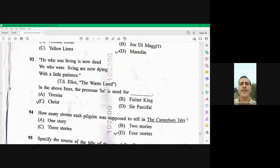Question number 93. He who was living is now dead. We who were living are now dying with a little patience. This line has been taken from T.S. Eliot's The Wasteland. Here he is used for the Christ who was dead. So Christ is the right option here.